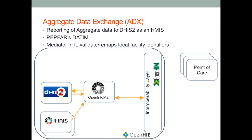Next, we have the aggregate data exchange standard. This is for generators of aggregate data about the health system from point-of-care applications. You can submit a message to DHIS2 — for example, the number of doctors in a specific facility during a particular month, or the number of cases of cholera in a district for that month. We're using the ADX standard for this data exchange. A point-of-care system generates the ADX message, it goes into the interoperability layer, which validates the message, translates any local facility identifiers to the canonical enterprise identifier, and then passes it on to DHIS2 for reporting.